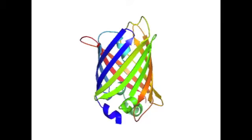In order to make the fish glow, they inserted the gene that codes for GFP into the embryo of a zebrafish. When the cell divided, every cell had this gene in their genome. When the fish was formed, it was able to create GFP in every cell, resulting in a glowing fish.